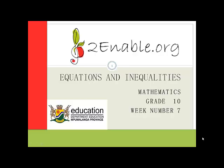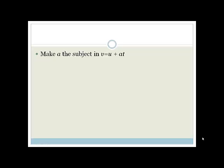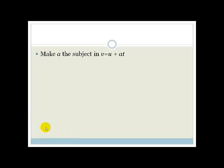Good day Grade 10s. In this lesson we're going to be looking at how to solve literal equations, or as you may call it, changing the subject of the formula. All we're going to be doing is looking at how to rearrange these to make one variable the subject — that is, the one that is on one side of the equal sign by itself. The best way to get these right is to practice, practice, practice. You're really just using your basic rules of algebra.